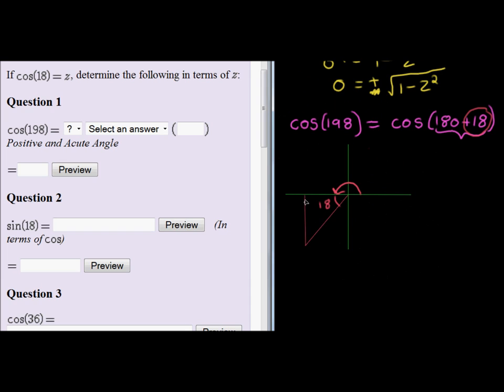The only difference is now the triangle is rotated, so the y-axis is pointing downwards, and actually the x-axis is in the opposite direction as well. So x is negative, so this is now -z, and this one is -√(1-z²). This is still positive 1, and the hypotenuse will never be negative.